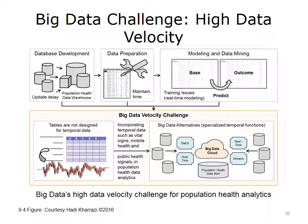This diagram shows the effect of big data's data velocity on the population health analytic process. The lower half of the diagram shows the reason for such limitations and how big data solutions can help to solve them. As shown in the left side of the bottom diagram, relational databases are usually limited in storing and managing temporal data sets. Future population health data warehouses may include temporal data generated by remote devices and mHealth solutions. The big data alternatives include temporal data sets and platforms that are designed to receive, process, and analyze temporal data in real time.